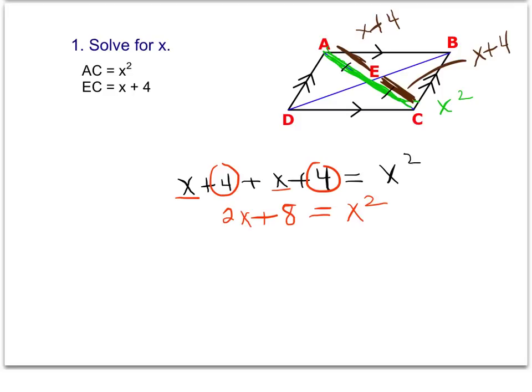Putting it in standard form just means we're going to get everything over to one side and set the equation equal to zero. So when I subtract everything from the one side, I'm going to get x squared minus 2x minus 8 equals zero. It doesn't matter which way that equation looks. We're still able to factor that now.